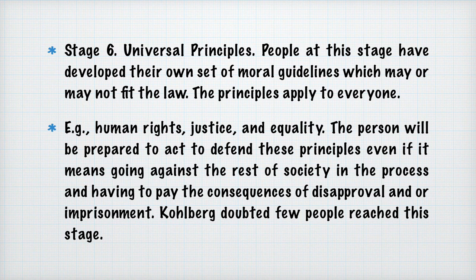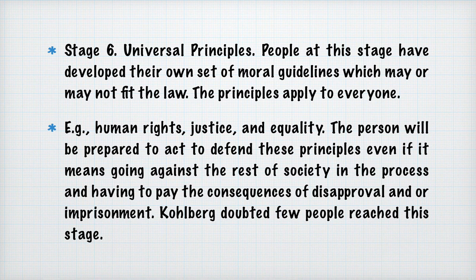Stage 6 is universal principles. People at this stage have developed their own set of moral guidelines, which may or may not fit the law. This principle applies to everyone — examples include human rights, justice, and equality. People will be prepared to act to defend these principles even if it means going against the rest of society and having to pay the consequences of disapproval or imprisonment. Kohlberg doubted that few people reach this stage.